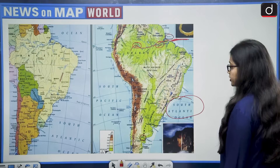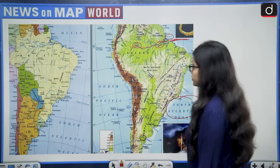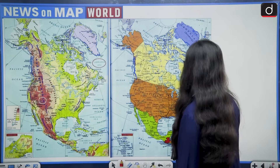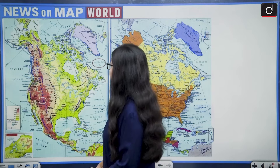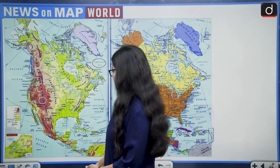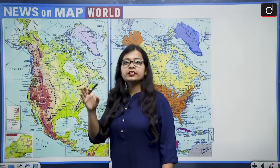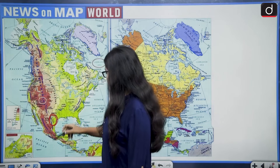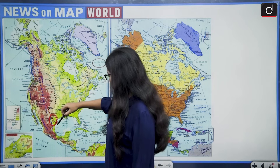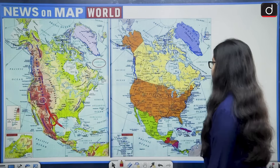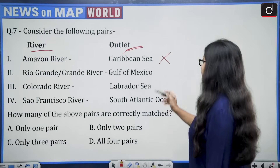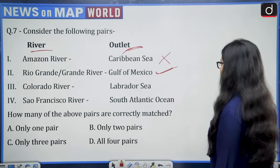Second pair: Rio Grande or Grande River — Gulf of Mexico. Looking at the map, this is the location of the Rio Grande river, and it opens into the Gulf of Mexico. So this pair is correct.